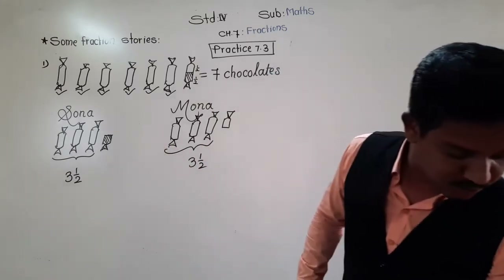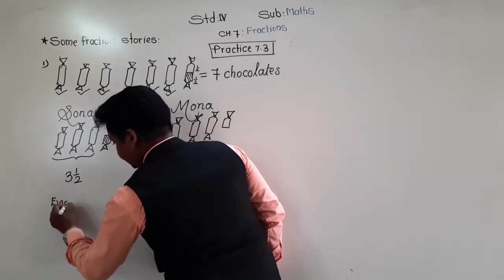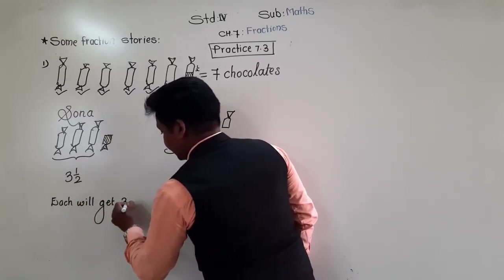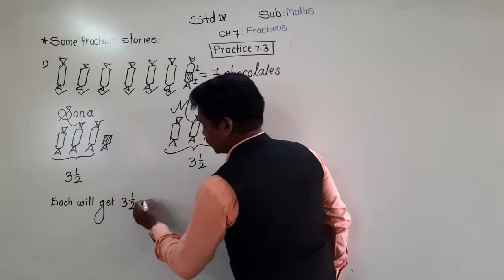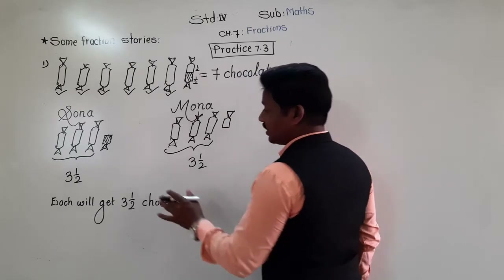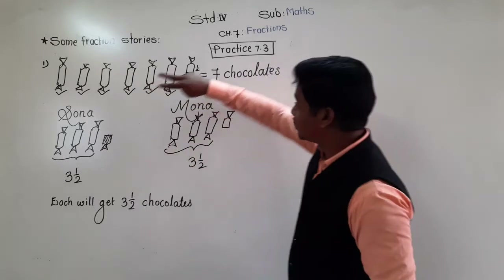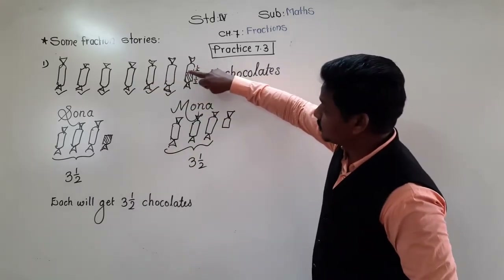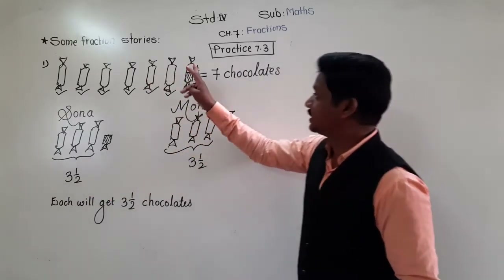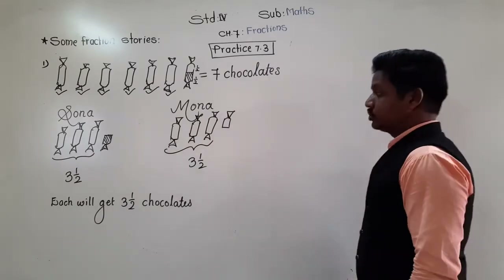Our question was: how much will each get? Each will get 3 and half chocolates. The half is written as a fraction: that last chocolate was divided into 2 equal parts — so 2 is the denominator — and we have taken 1 part, so 1 is in the numerator. That is 1 by 2. So the answer is 3 and 1/2.